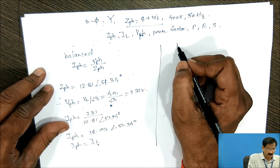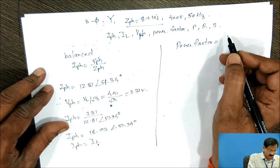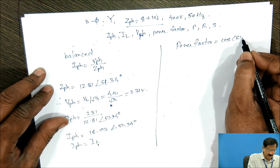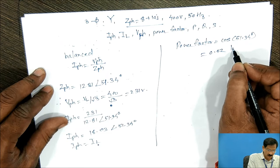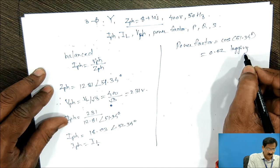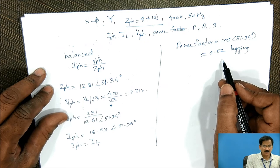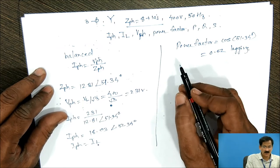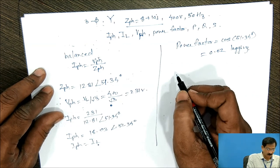Now, power factor. Power factor, it is equal to cos of 51.34 degree, comes out to be 0.62 lagging. Here, the power factor is lagging because the current is lagging. Why the current is lagging? Because it is an inductive circuit, so voltage leads currents by this angle 51 degrees.